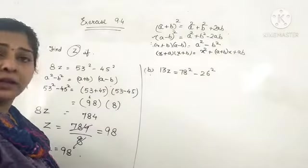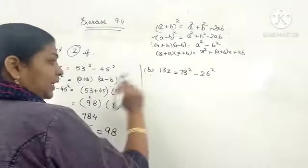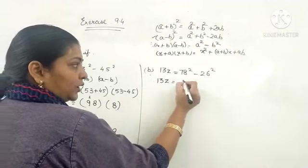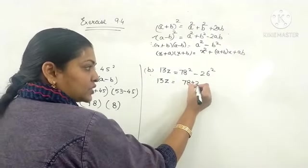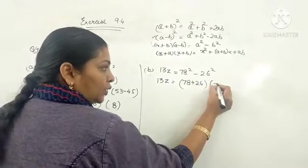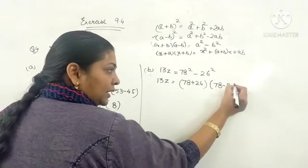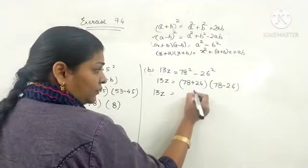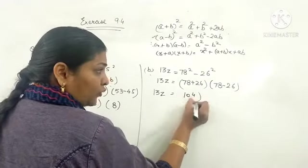Here I will apply the formula directly. 30Z is equal to 78 plus 26 into 78 minus 26. Add them: 6 plus 8, 14 will carry, 104.